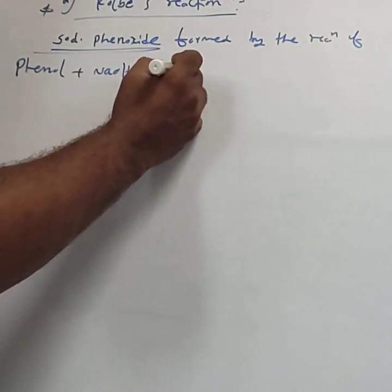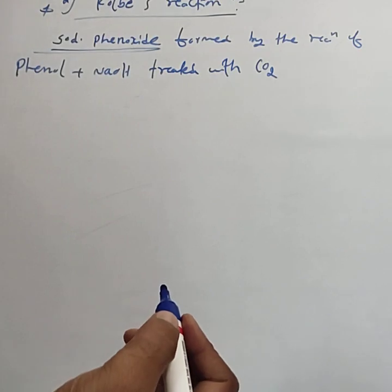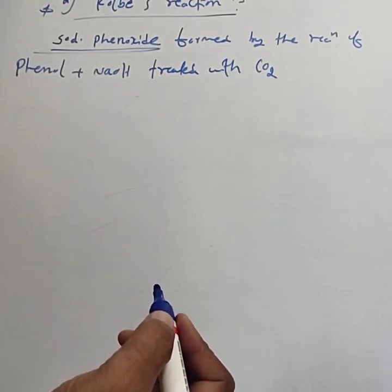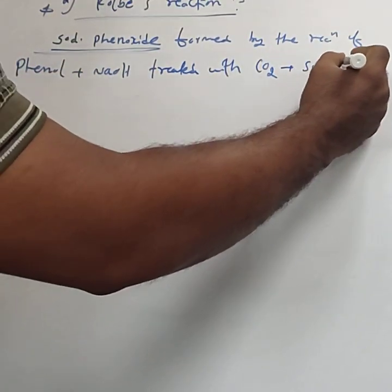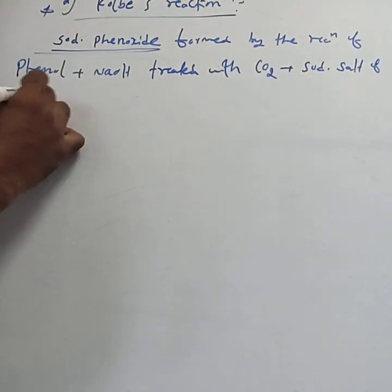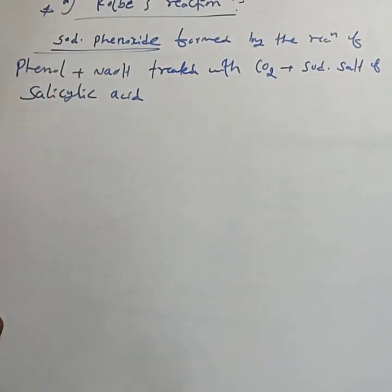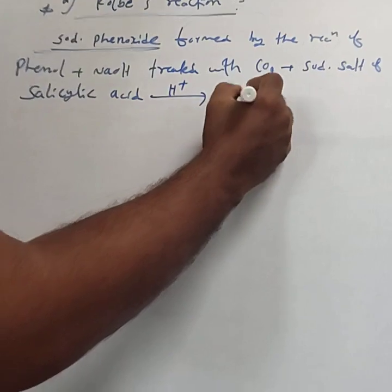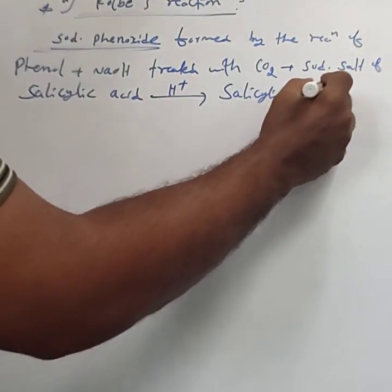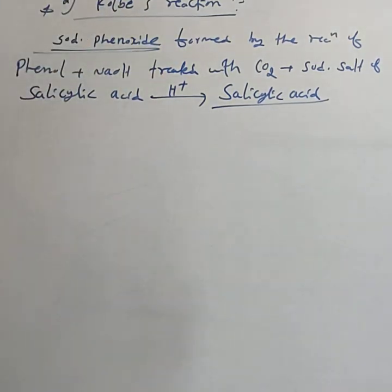The sodium phenoxide is then treated with carbon dioxide, and the product is the sodium salt of salicylic acid, which on acidification gives salicylic acid. This reaction is called the Kolbe reaction and is very important.